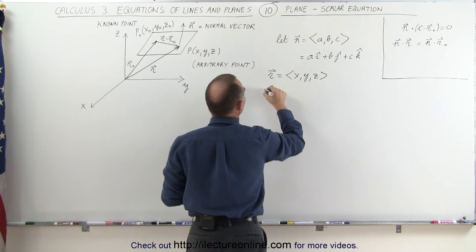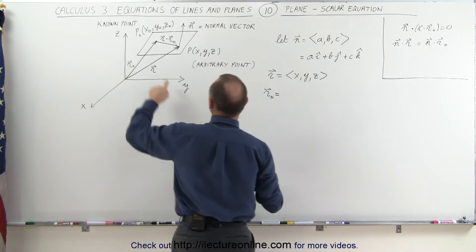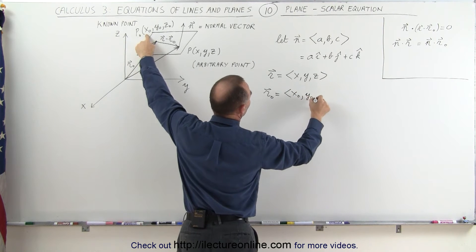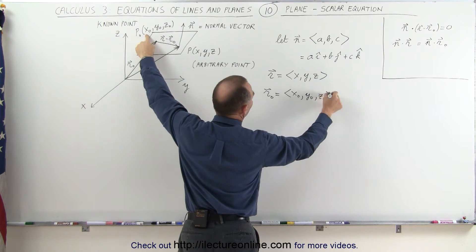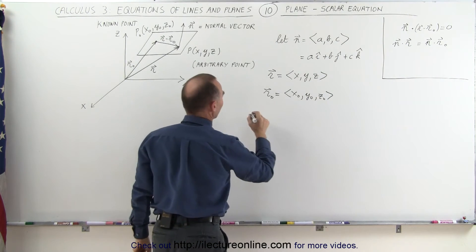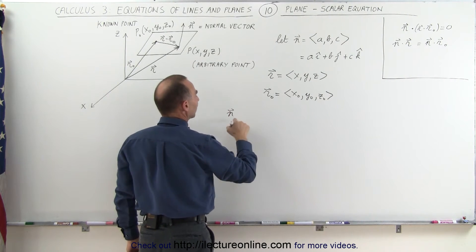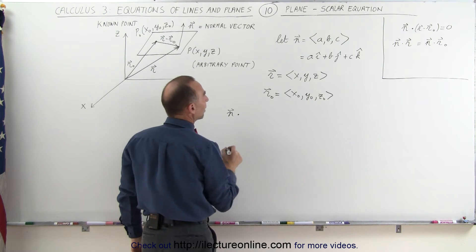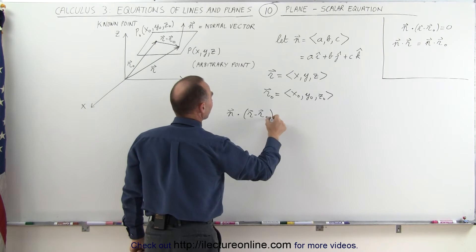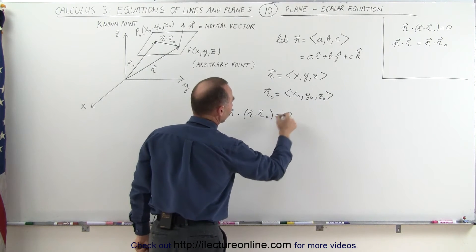And we can find the r sub-naught vector by taking the coordinates here: x sub-naught, y sub-naught, and z sub-naught. Now, let's go ahead and use this form of the equation right here. We're going to take the normal vector and have the dot product with r minus r sub-naught. Let's see what that looks like. We know that's equal to zero.